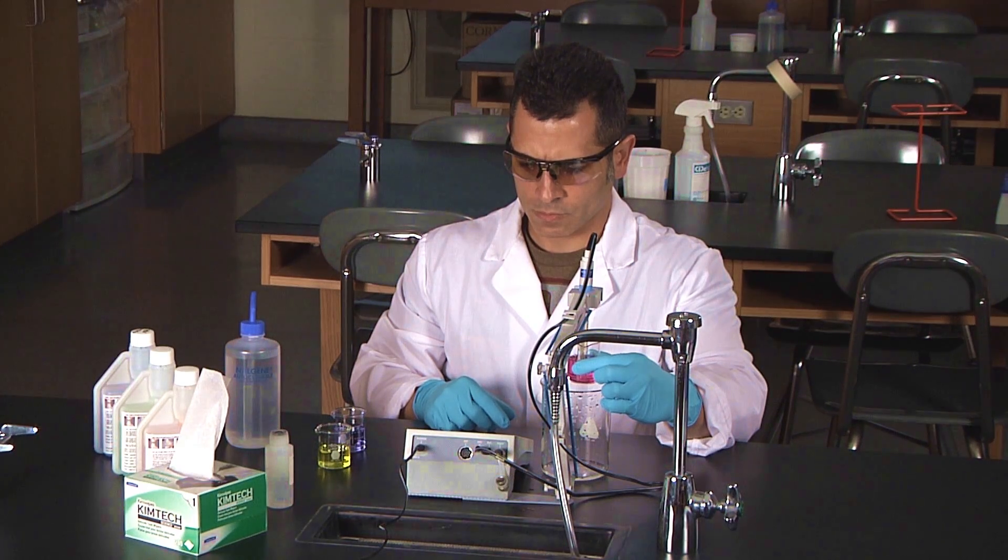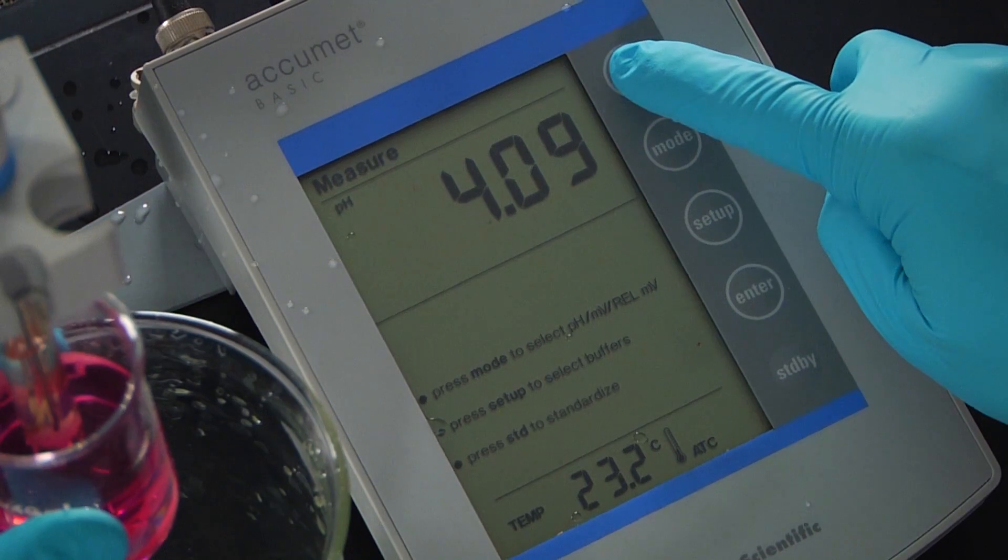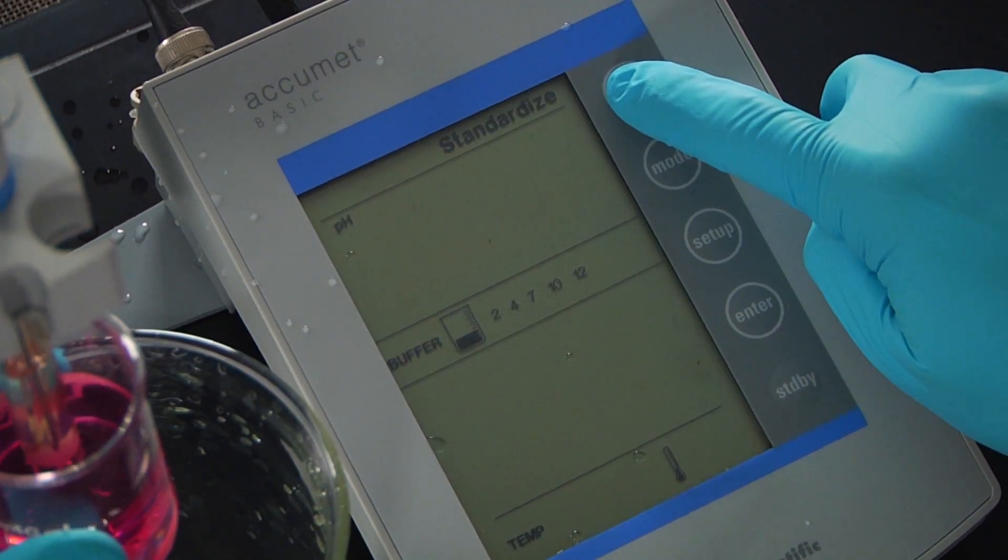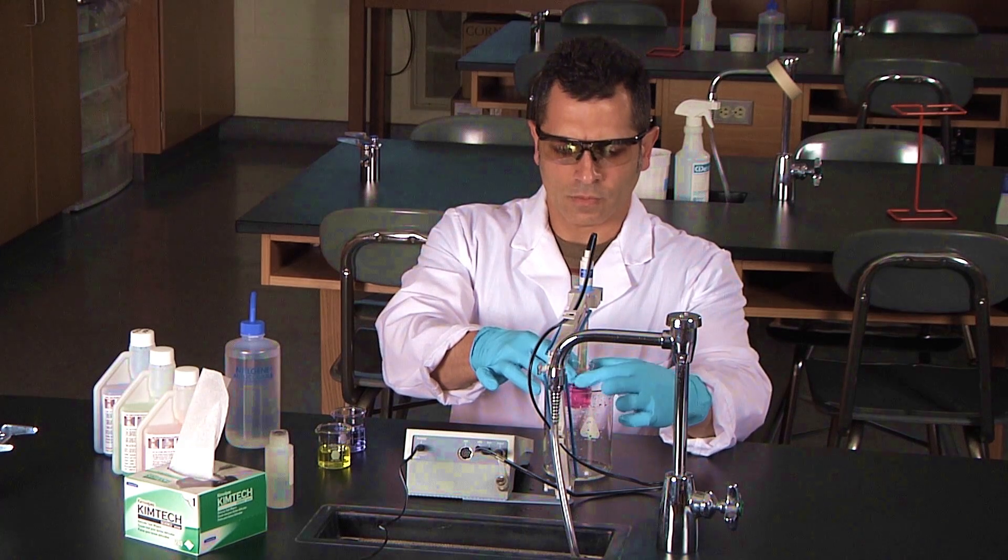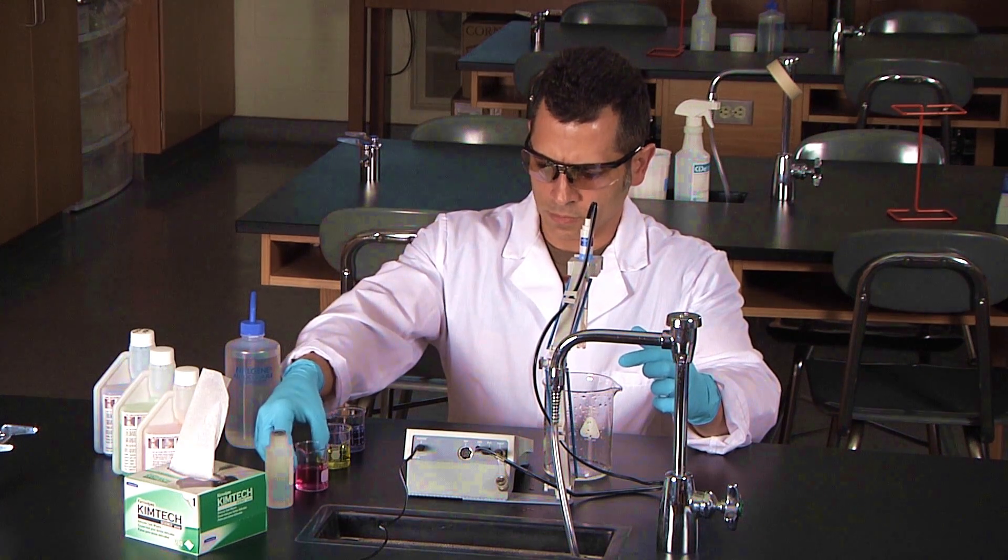Once the stable icon appears, press the standardized key. The display on the pH meter should read 4.00, but a range of plus or minus 0.05 is acceptable.